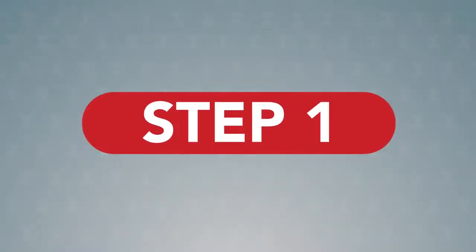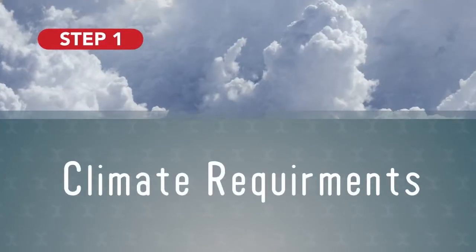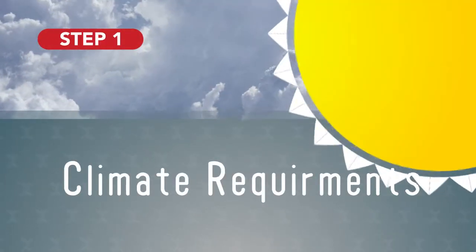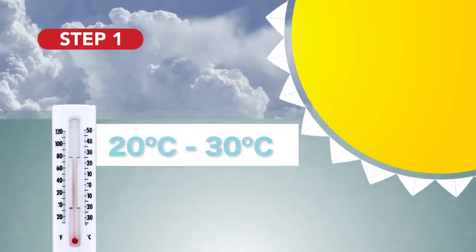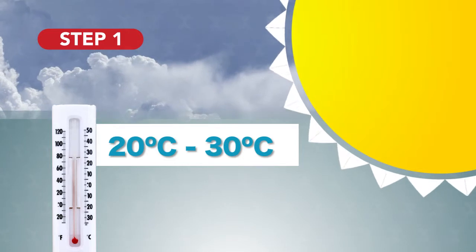Climate Requirements. Tomatoes, being day neutral, require high light intensity. The most appropriate temperature for germination is between 20 to 30 degrees Celsius.